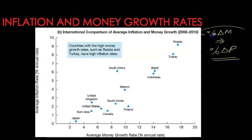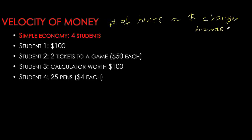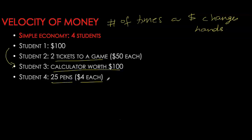Velocity of money is simply the number of times a dollar changes hands. You can use a very simple example to understand what we mean by velocity. In this simple economy I have four students. Student one has $100, so that's the total stock of money in this economy. The other students have no money, but they do have goods or services to exchange. Student two has two tickets to a game worth $50 each, the third student has a calculator worth $100, and the fourth student has 25 pens worth $4 each.